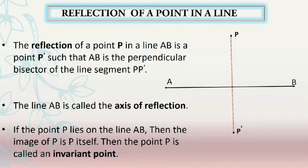There is a special case: if the point P lies on the line AB, then its image P' is the point P itself. In this case, the point P is called an invariant point. A point P is called an invariant point with respect to a given line if and only if it lies on the given line.